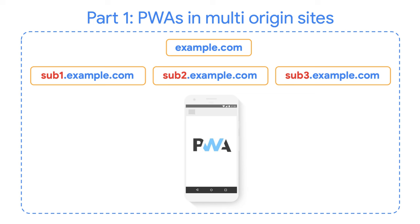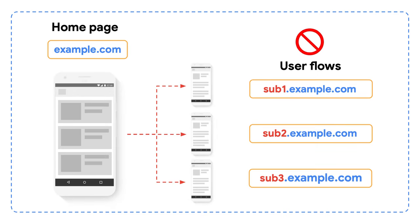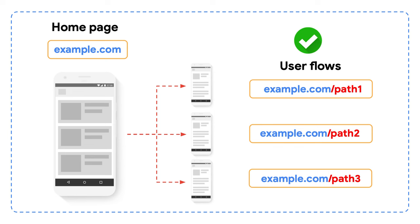This is the second video of a two-part series about progressive web apps on sites that consist of multiple origins. In the first talk, PWAs in multi-origin sites, we went over the challenges that developers face while building PWAs that encompass multiple origins. As we saw in those cases, the recommendation is avoiding this type of site architecture, where different origins like subdomains are part of a unified PWA experience. For those that already have sites built in this way, migrating to a single origin is the best option.